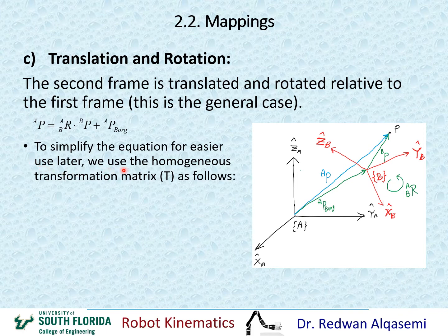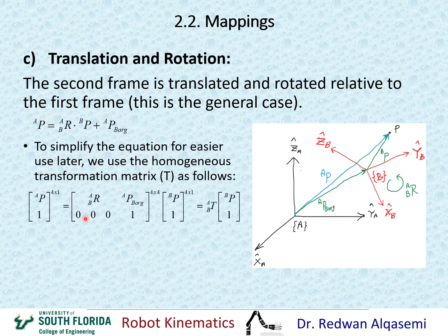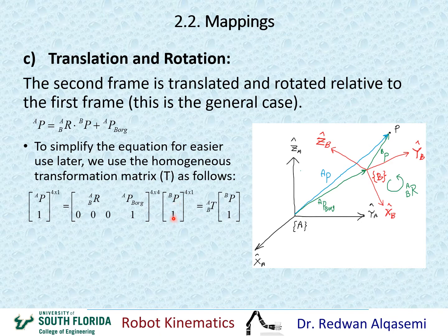Now I can utilize the homogeneous transformation matrix found earlier to simplify this equation further. We have a transformation matrix in the standard format that includes the rotation portion, R of B relative to A, and the translation portion, P of B origin relative to A — it's a 4 by 4 matrix. If I multiply this by P_B, since this is 4 by 4, I cannot directly multiply it by P_B which is 3 by 1. So I put 1 at the bottom, making this vector 4 by 1, making the dimensions consistent.